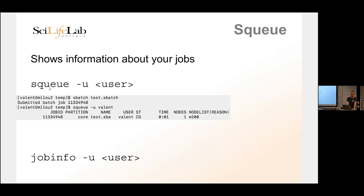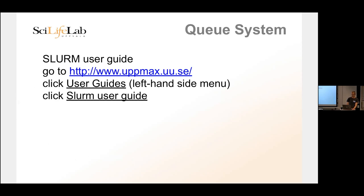The sq command has an alternative called 'jobinfo', which is also available on the SNCC systems. It works the same way as sq but gives more information: how much time is left on the job, and if your job is still waiting in the queue, it shows your position. So you know if you're position 10 or position 1,000 and can estimate when your job will start.